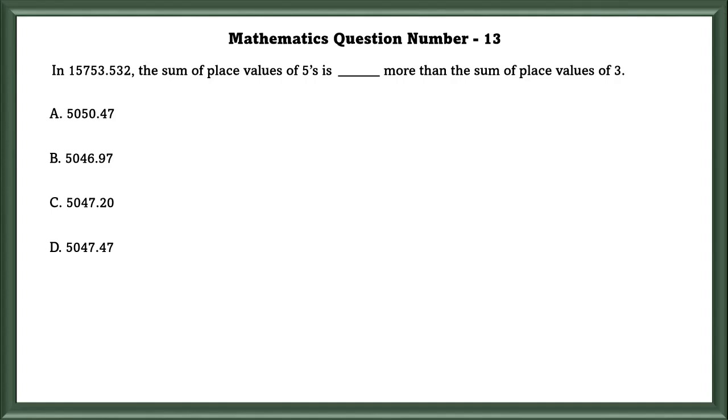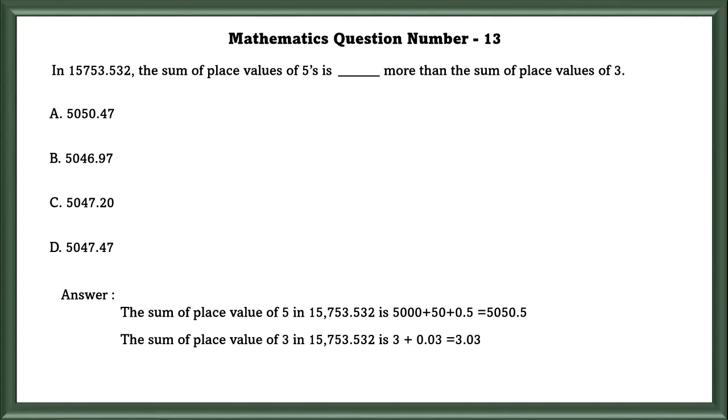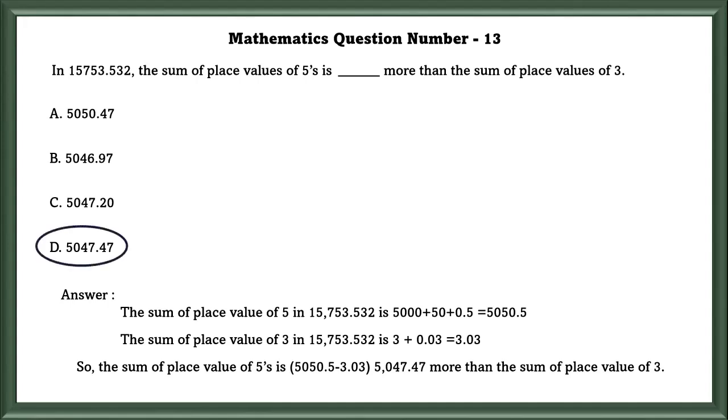Mathematics Question Number 13: In the value, the sum of place values of 5 is blank more than the sum of place values of 3. Sum of place values of 5 is equal to 5050.5, and the sum of place value of 3 is equal to 3.03. So the sum of place values of 5 is 5047.47 more than the sum of value of 3. So that is B.